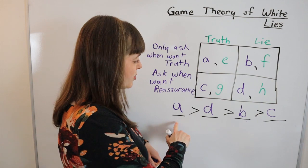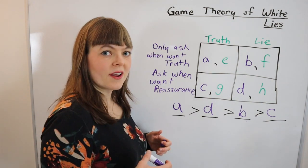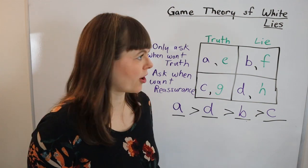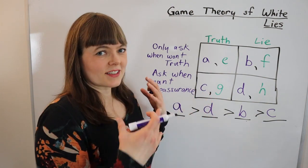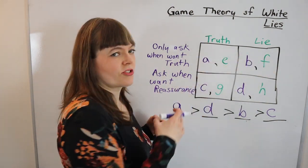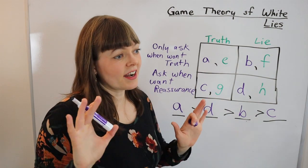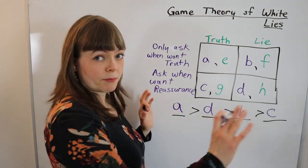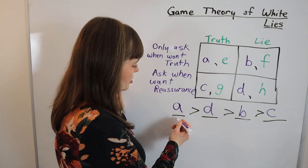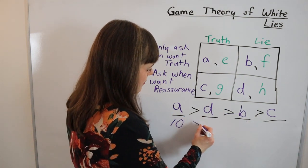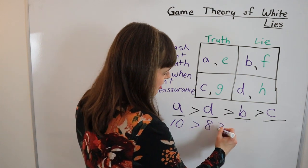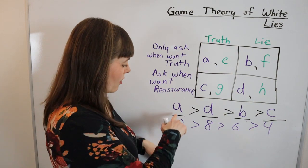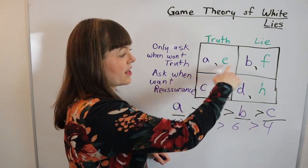My next step here is just to assign numbers in this order, and for the game theory here it doesn't actually matter what the numbers are. Now if you're going to build in uncertainty, like she doesn't know which strategy he's going to take, then the actual values of these numbers would matter. But for a really simple pure game it doesn't matter, so I'm just going to come up with some numbers here that I kind of like. It doesn't matter what they are, and now I'm just going to replace those numbers in the table up here.